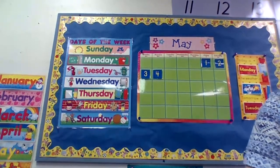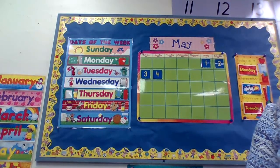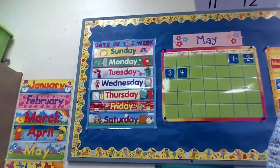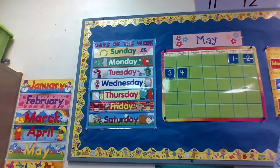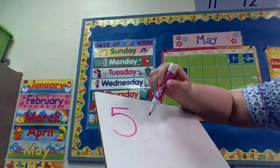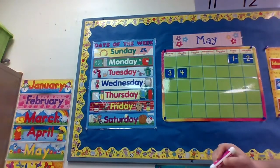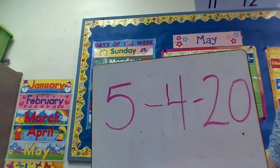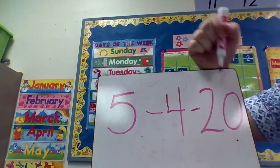Let's write the date down. Remember, May is our fifth month. We count January, February, March, April, May — May is number 5. What day is it? Look on our calendar — 4. And what's the year? 2020. So we write: 5, 4, 20. So it's 5-4-20, which is May 4th, 2020.